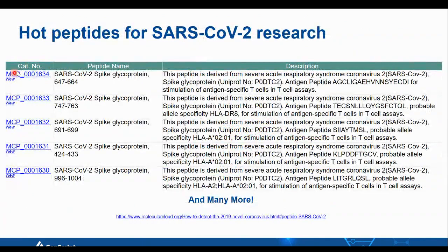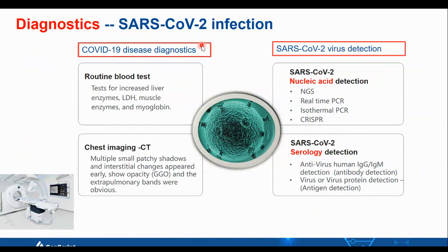We also have single peptides available that can be used for generating peptide vaccines or for eliciting antibody responses in animals for antibody discovery against COVID-19. Besides various ways to help researchers with COVID-19 research, vaccine validation, and development, diagnostic kits are also crucial to ensure quick identification of COVID-19 clusters to curb their spread.